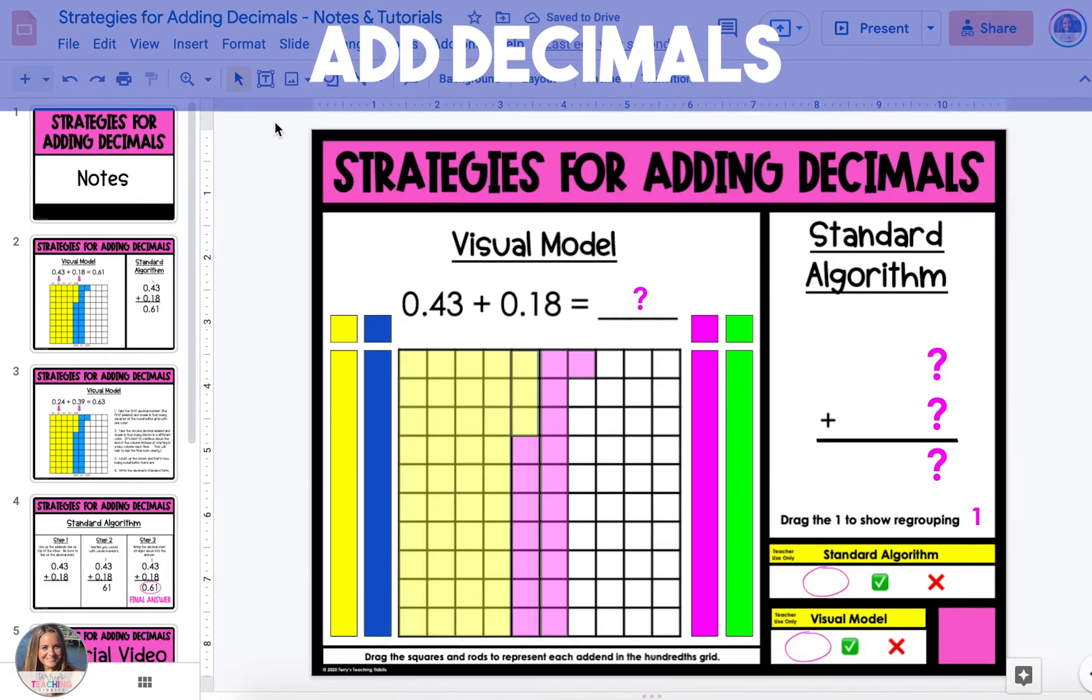If you zoomed in on the slides, don't forget to zoom back out. Now count up the shaded area of the model. Remember that every column is worth 10 hundredths, so if there are six columns, that's 60 hundredths plus one additional hundredth in the seventh column for a total of 61 hundredths.